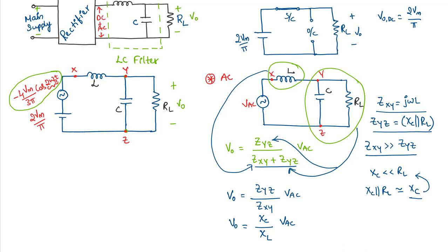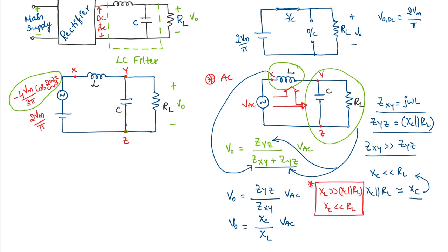Pictorially, the majority of AC voltage drops across the inductor, and only a very small component appears at the output, depending on the chosen values of L, C, and R. The two key assumptions made are: XL ≫ (XC ∥ RL), and XC ≪ RL. The V_O written here is the AC output voltage, V_O(AC).